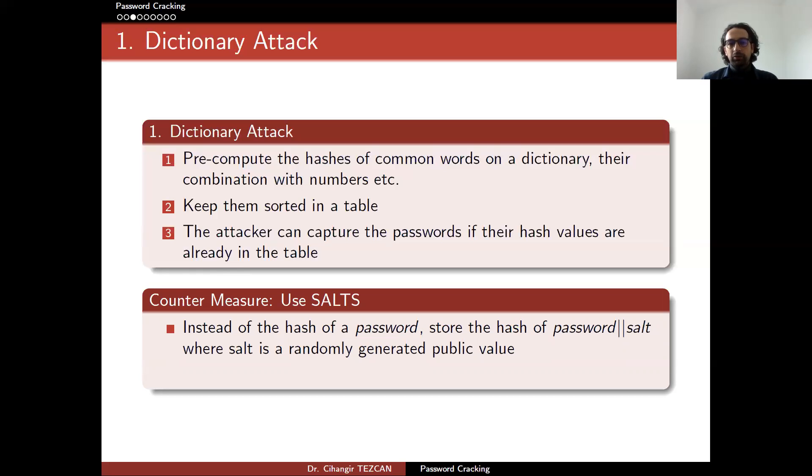But how do we overcome this? The solution is very easy. This way we can be resistant against dictionary attacks. So assume that you are running a system and people are generating accounts and they are choosing passwords. So instead of storing their password directly or the hashes of their password directly, generate a random value. We call it salt.